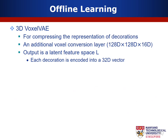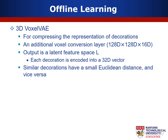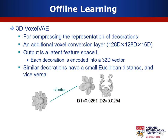The 3D voxel VAE is to compress the representation of decoration. There is an additional voxel conversion layer before the real dataset is passed into the encoder. The meshes of all decorations are first transformed into 3D voxel grids in the dimension of 128 by 128 by 16. We specify 32 as the number of latent dimensions to encode the feature of the decoration. Within the latent space, similar decorations will have a small Euclidean distance and less similar decorations will have a larger Euclidean distance, as shown in this figure.